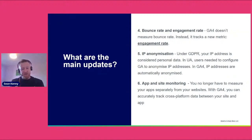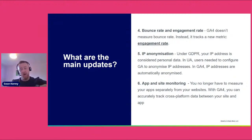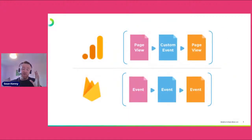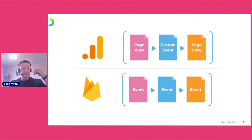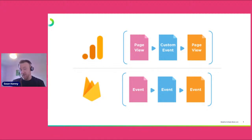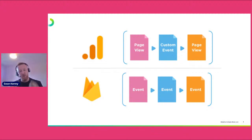App and site monitoring is one of the big changes too — you no longer have to measure your apps separately from your website. With the newest version, you can accurately track across platforms and devices, and build out a much clearer view of the customer journey without all the complicated separate processes from the older version. To make one specific point about events: Google Analytics 3 used to tell us about the amount of page views a user had, and then separately tracked custom events — meaningful actions you set up manually, like clicking a certain link, watching a video, or adding to cart. In Google Analytics 4, everything is now automatically an event, and it uses that to really understand true engagement.